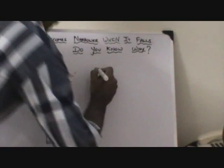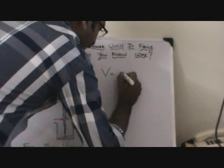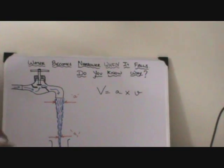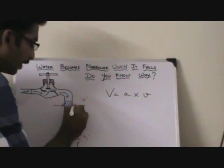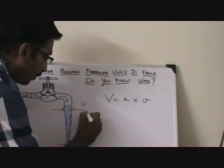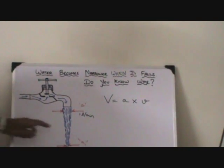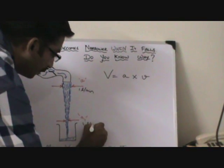Now let's get back to basics. The volume flow rate V is equal to the area of cross-section multiplied by velocity. This volume flow rate should be constant always. Let's say the flow rate at this point is one litre per minute — it should be the same at the lower point, one litre per minute.